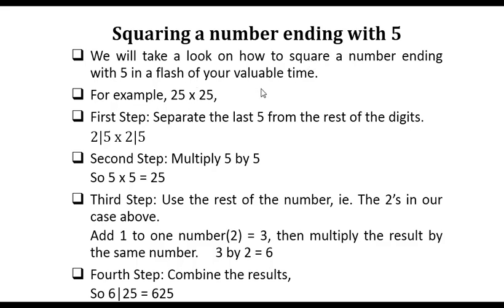For example, 25 times 25. We'll go through four steps. First step: separate the last 5 from the rest of the digits. So 25 times 25, we separate the 5s, so we remain with 2 and 2.